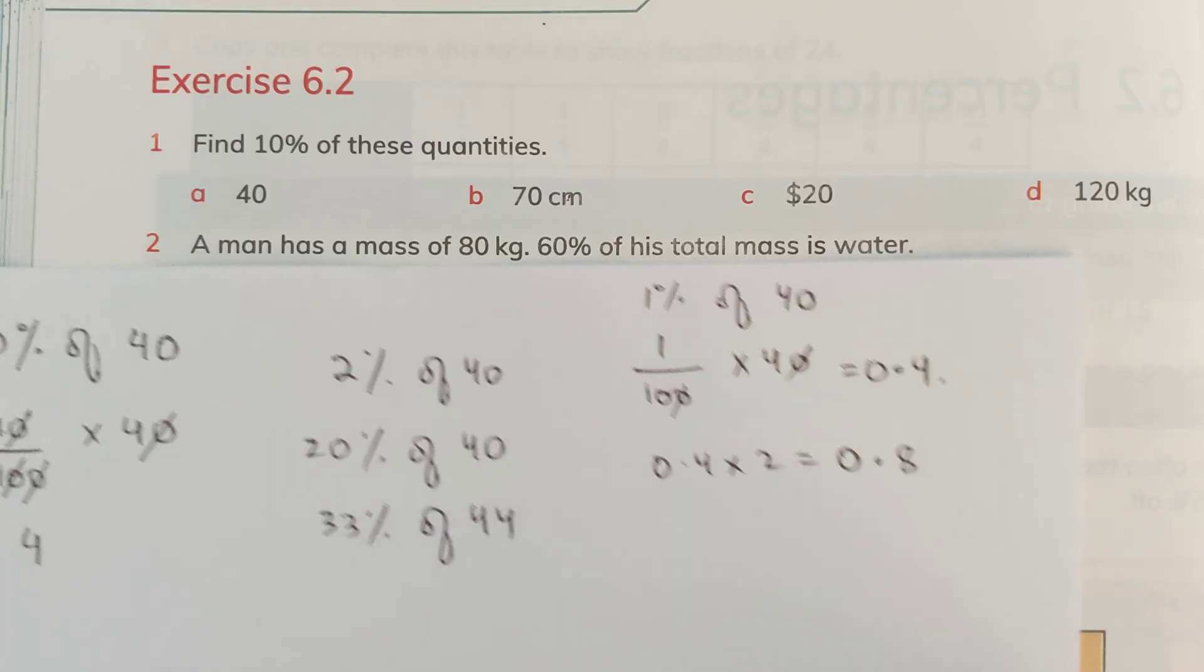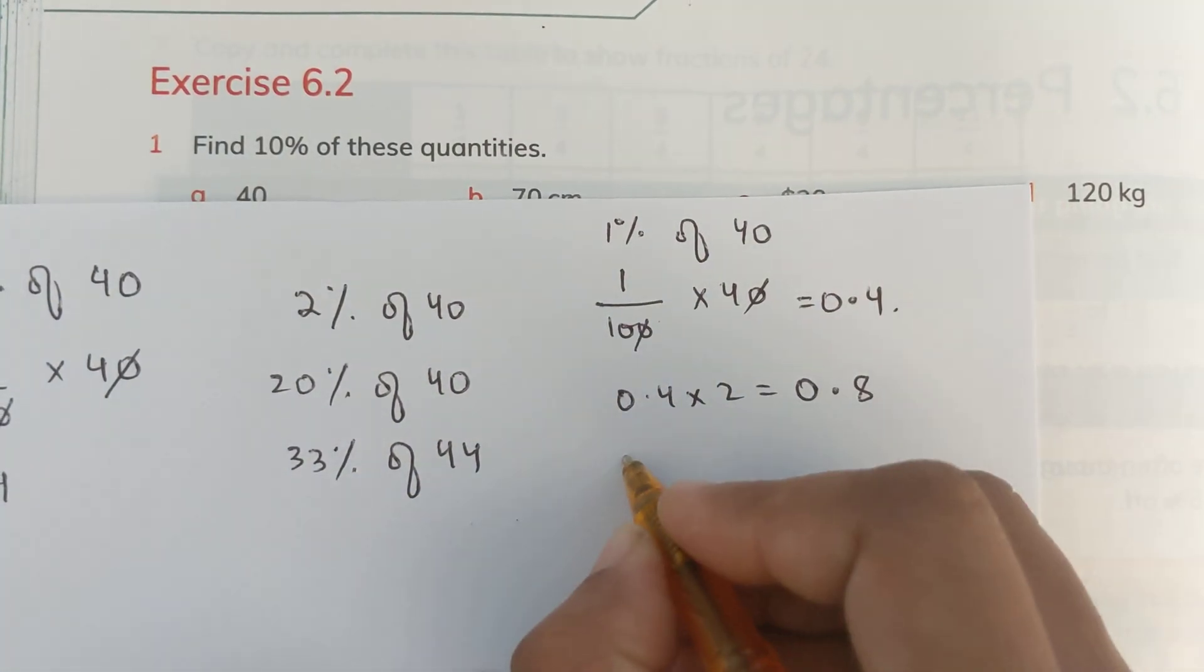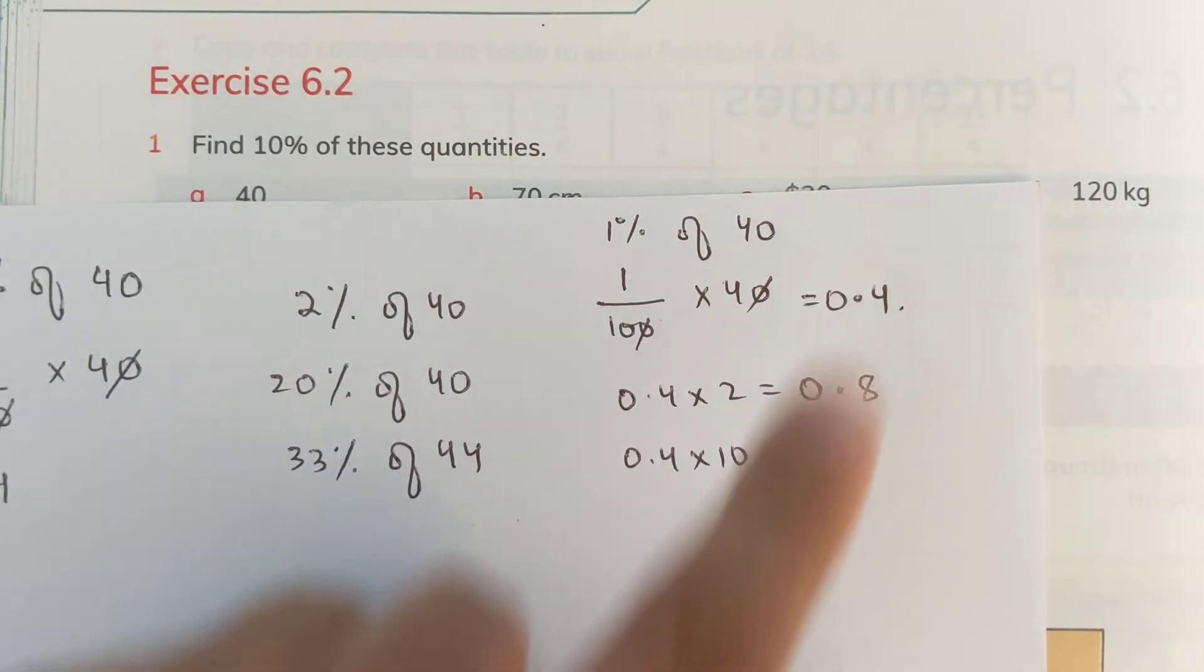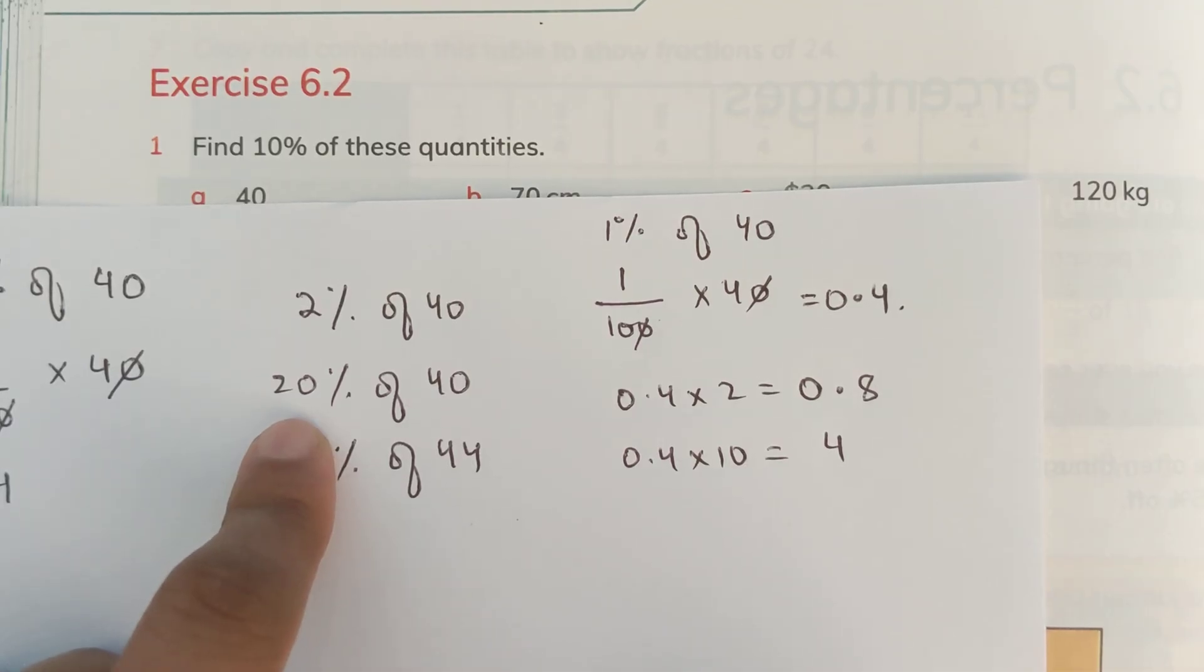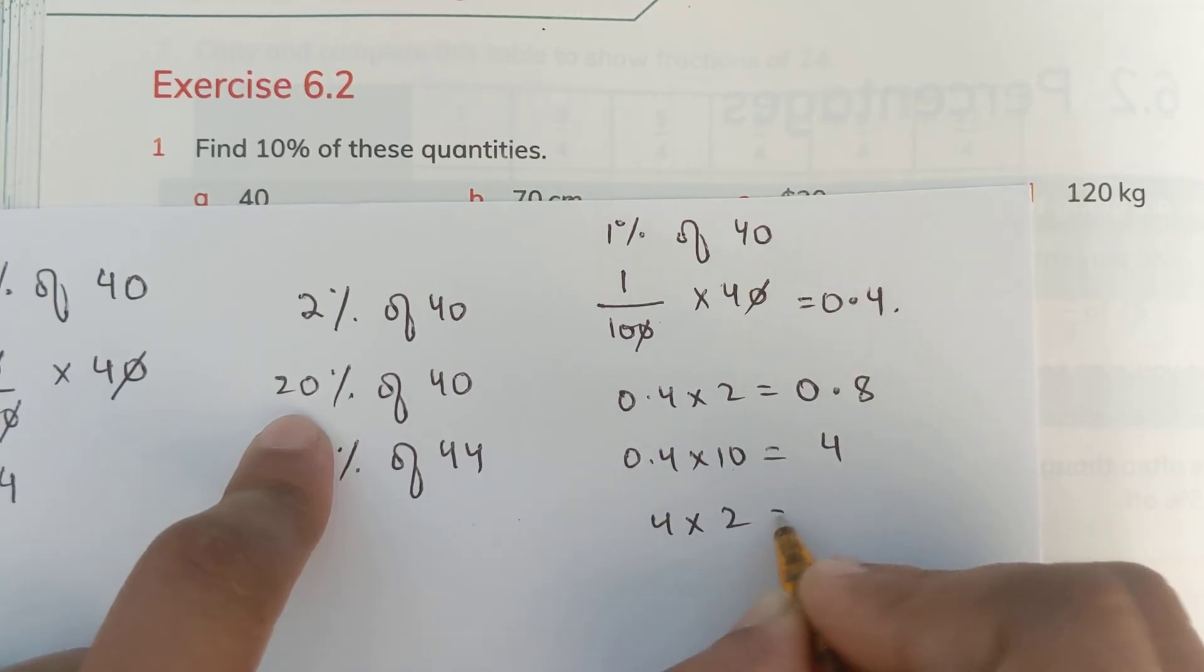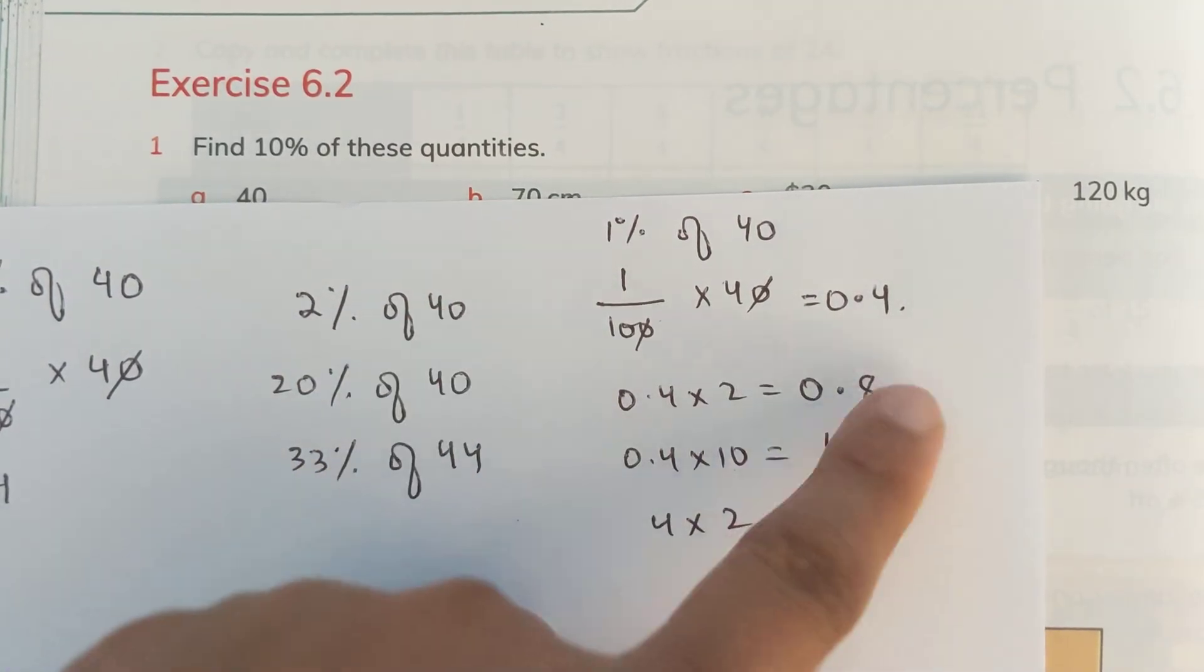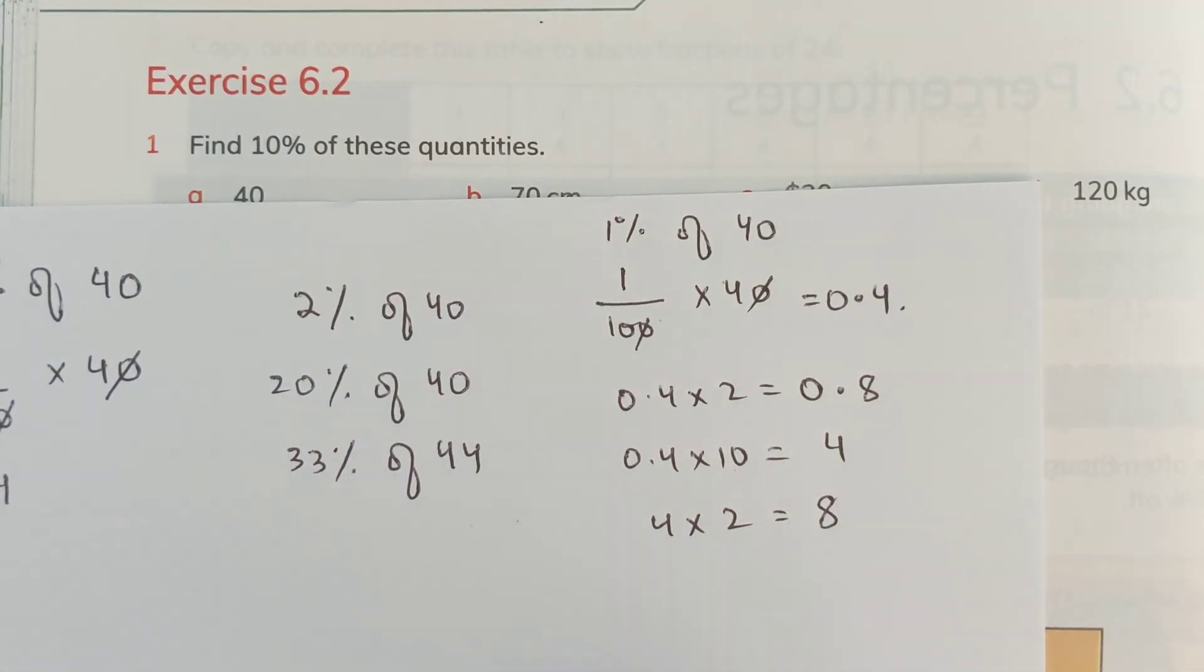Similarly, if we have to calculate 10% of 40, so if 1% is 0.4, 10% would be 0.4 multiplied by 10. That is 4. You see, 40 divided by 10 or 0.4 multiplied by 10 equals the same. If we need to calculate 20% of 40, so if 10% is 4, what would be 20%? It would be 4 multiplied by 2. That is 8. Or if 2% of 40 is 0.8, 20% of 40 would be multiplied by 10. 0.8 multiplied by 10.